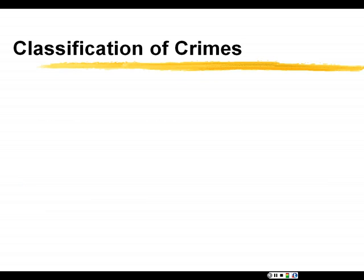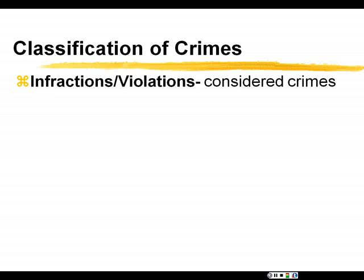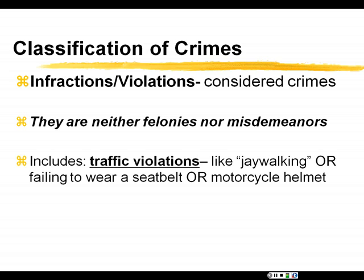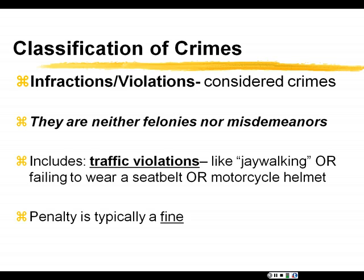The third type of crime — though we often don't think of them that way — is infractions, also called violations or citations. They're neither felonies nor misdemeanors. Examples include traffic violations: jaywalking when a light is red, not wearing your seatbelt, not wearing your motorcycle helmet, speeding — say, going 45 in a 35 mph zone. You get a ticket. The ticket is technically a crime, even though it might come under vehicle code. The penalty is typically a fine, and if you accumulate multiple traffic violations it may affect your insurance rates.